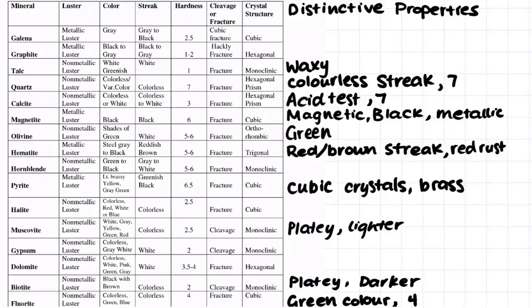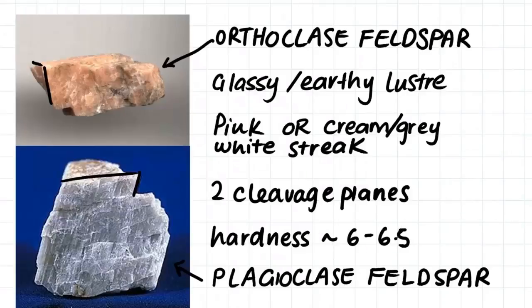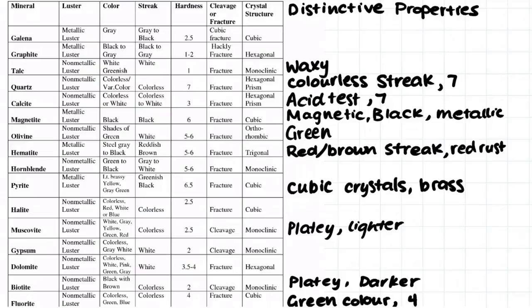So that was our last sample for today. I'm just going to finish back on this table, because it contains most of the minerals that we find in a lot of our rocks that we will be studying. All the properties here are quite important, especially the distinctive properties. If you ever get tested on classifying minerals, knowing these distinctive properties can really help. The only other two minerals I would suggest you try to know are plagioclase and orthoclase feldspar, because they come up in a lot of our igneous rocks. I hope this video helped, and thanks for watching.